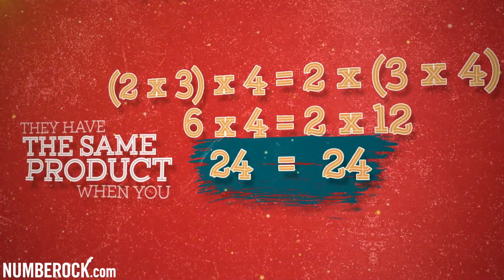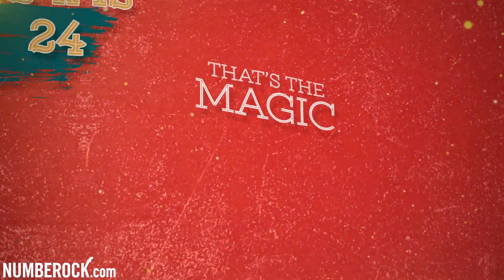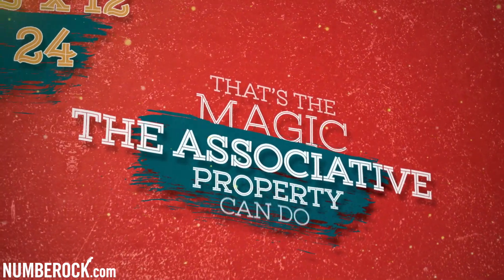They have the same product when you solve through. That's the magic the associative property can do.